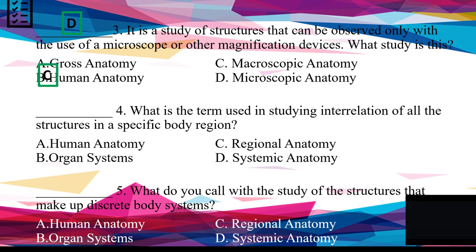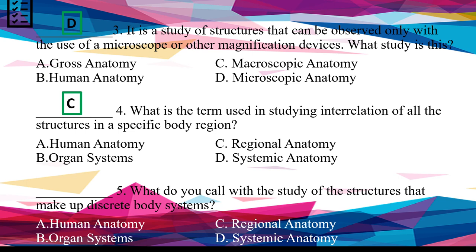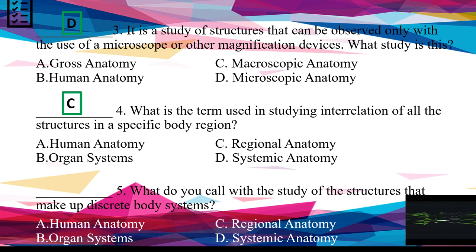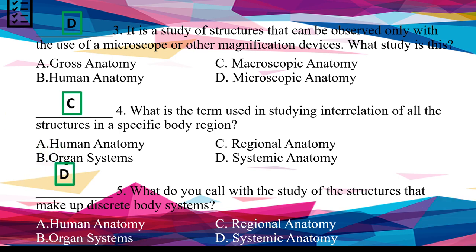If your answer is C, you got it right. Number 5: What do you call the study of the structures that make up discrete body systems? A. Human anatomy. B. Organ systems. C. Regional anatomy. D. Systemic anatomy. If your answer is D, you're correct.